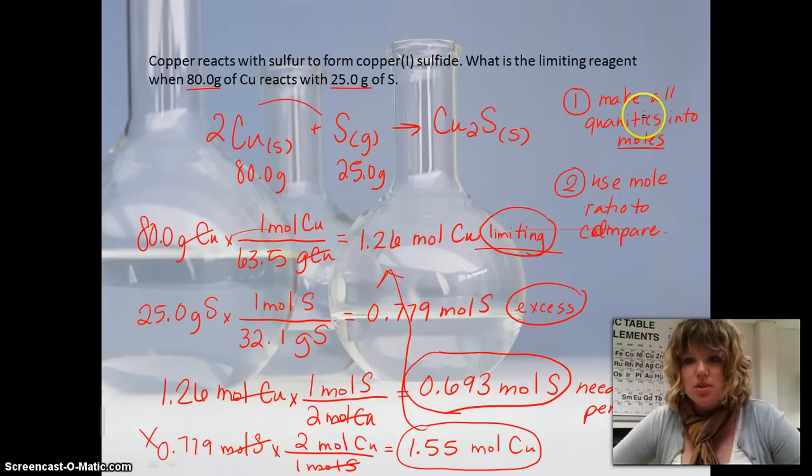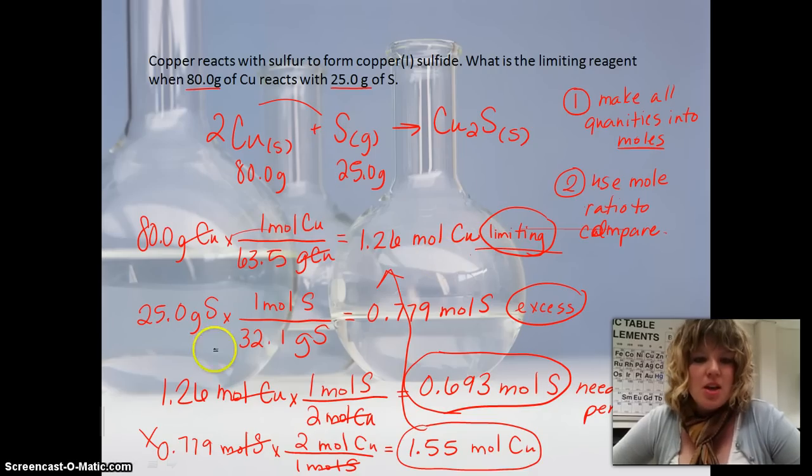And so this is how you would find the limiting reactant. Change them both into moles, and then do the mole ratios to compare them back to the amount of moles that you have. All right, so let's do one more.